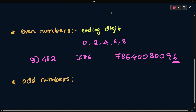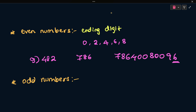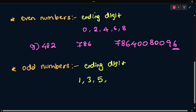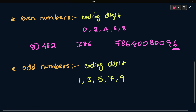Next is odd numbers. For odd numbers, the ending digit should not be 0, 2, 4, 6, or 8. Instead, the ending digit should be either 1, 3, 5, or 7. So in the units place, if the digit is 1, 3, 5, or 7, the number is an odd number. Numbers alternate: 1, 2, 3, 4, 5, 6 — the odd ones are identified using the units place. Simple.